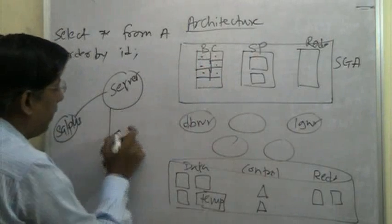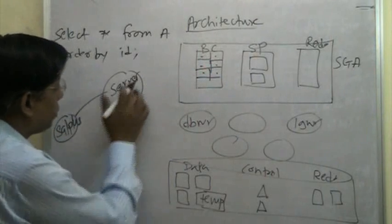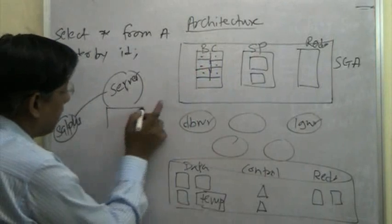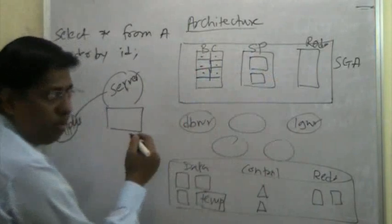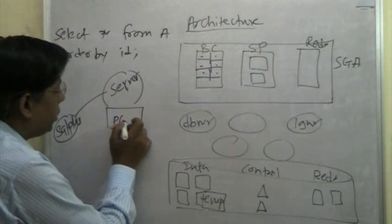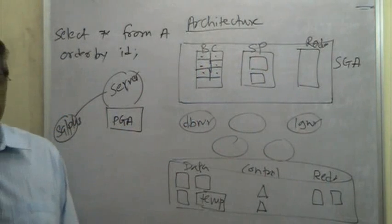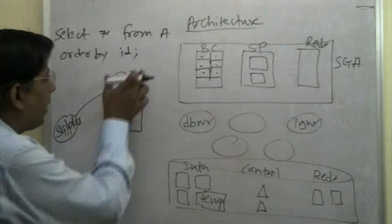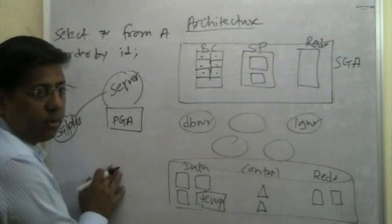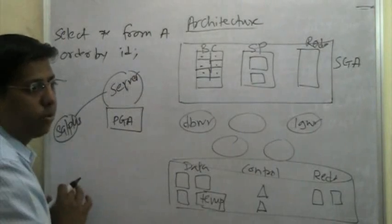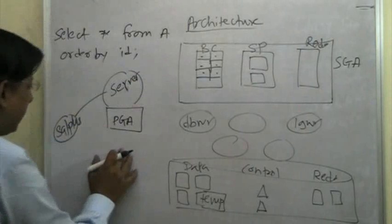Now, the sorting happens in a specific area for each dedicated server process. Just like there is an SGA, which is the memory area, there is something called as a PGA. PGA stands for Program Global Area. This is a memory area associated with the dedicated server process.